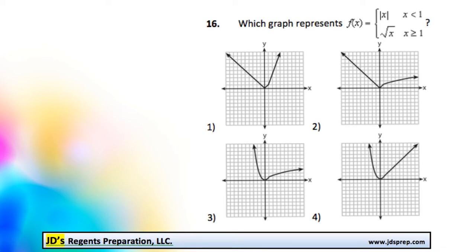This is problem number 16 from the August 2015 Algebra Regents exam. In this question, we're trying to find the graph which represents this function. It's a piecewise function, meaning it has two different possibilities based on the value of x. So if x is less than 1, it's the absolute value of x, and if x is greater than or equal to 1, then it's the square root of x.